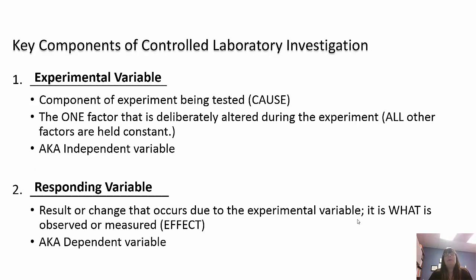Very importantly, you have two variables that are key to your lab investigations. The experimental variable is what's being manipulated — the cause — and it's also called the independent variable. Everything else is held constant. The responding variable is also called the dependent variable; this is the effect — the result or change that we're going to measure or observe, and it's caused by the experimental variable. The dependent variable depends on the independent variable.